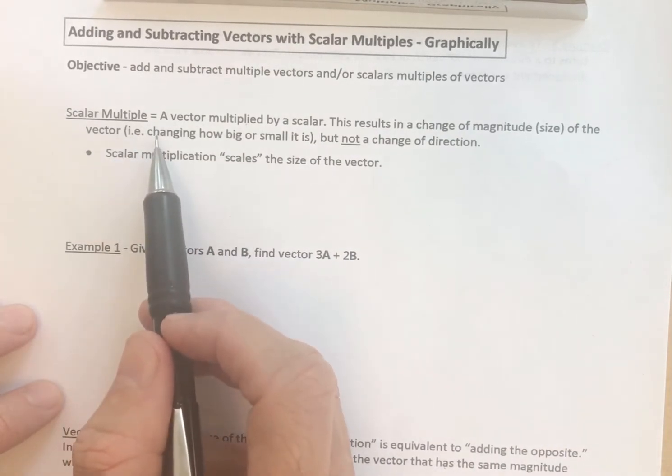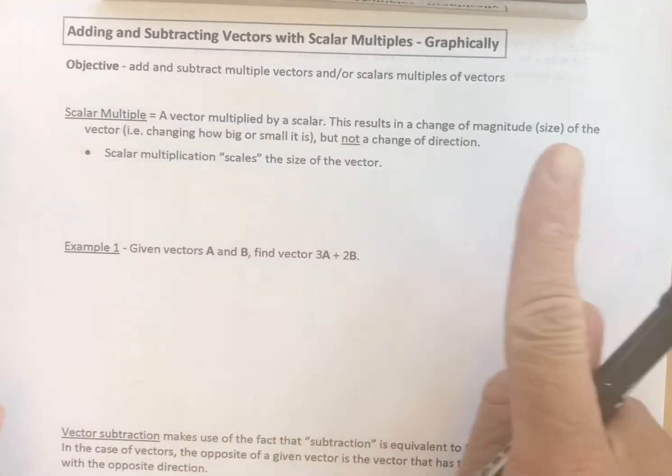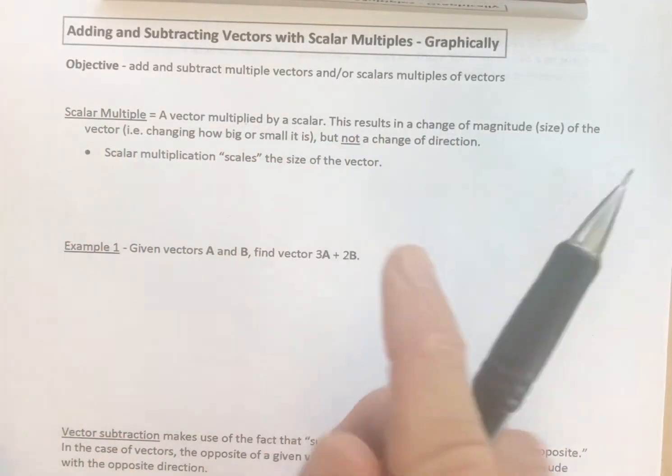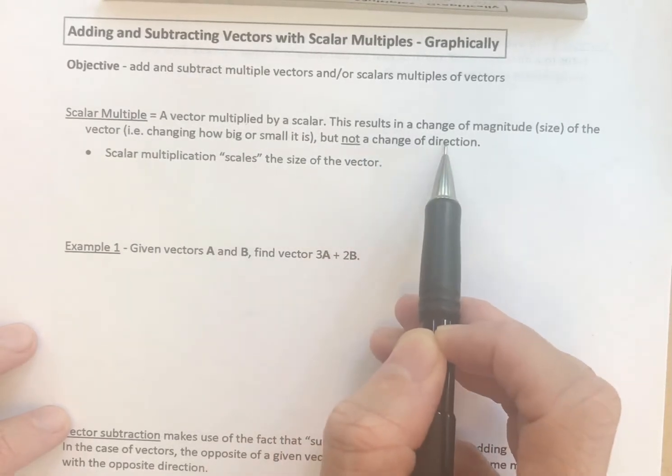In other words, we're changing how big or how small the vector is, how long or how short the arrow is, if you will. But we're not changing the vector's direction.